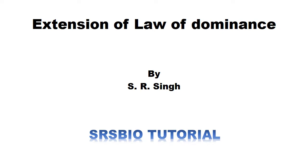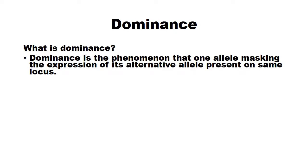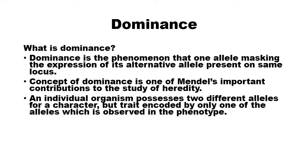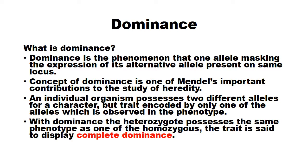What is dominance? Dominance is the phenomenon of one allele masking the expression of its alternative allele present on the same locus. It is one of the concepts put forward by Mendel. An individual organism possesses two different alleles for a character, but the trait encoded by only one of the alleles is observed in the phenotype. With dominance, the heterozygote possesses the same phenotype as one of the homozygous, and the trait is said to be complete dominance.